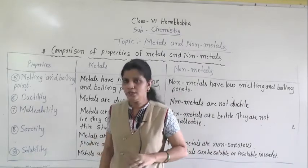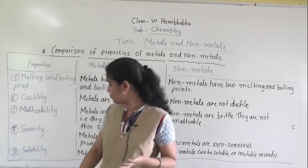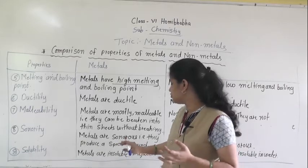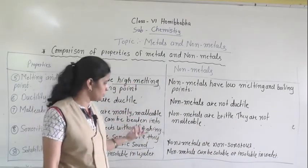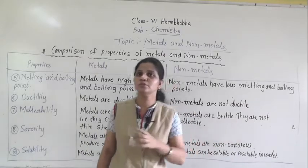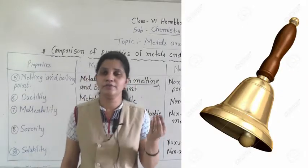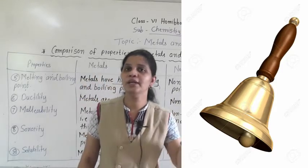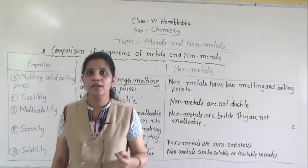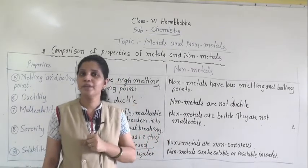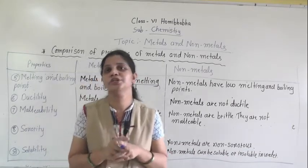The eighth property is sonority. Sonority means producing a sound when struck. Metals are sonorous — they produce a specific sound. A good example is the school bell: when the period gets finished, the bell rings and produces a sound. The school bell is made of metal. Non-metals are non-sonorous — they will not produce a sound when struck.